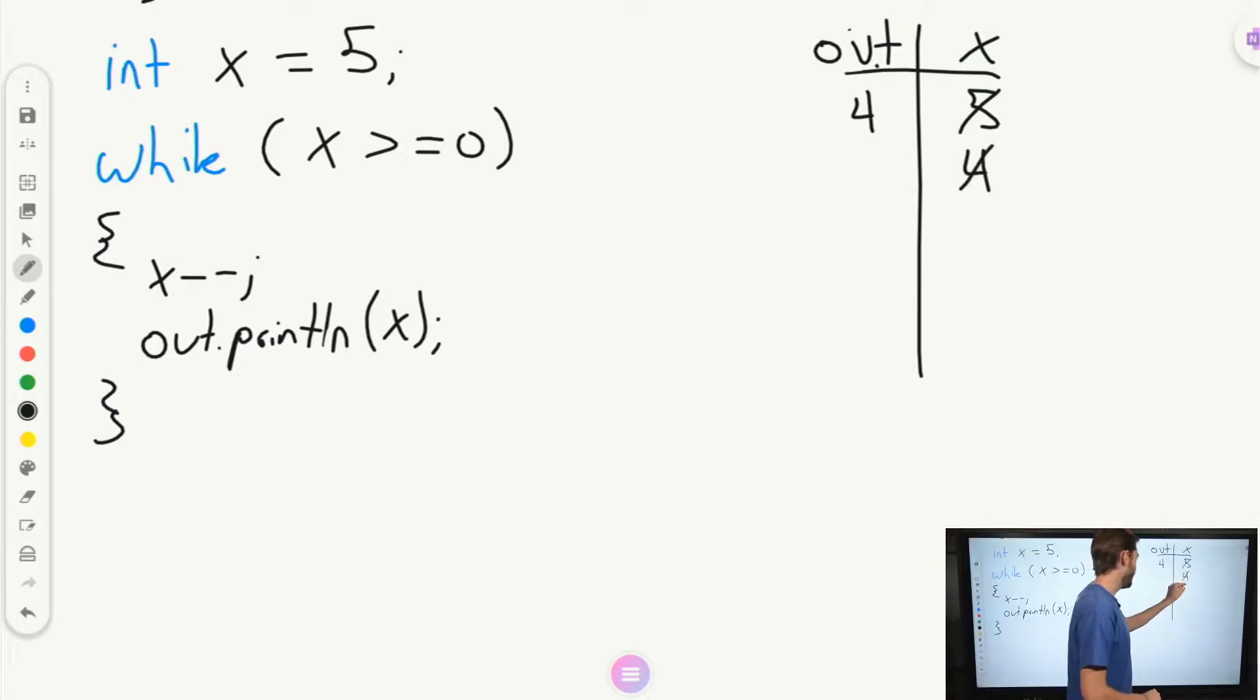Is 4 bigger than or greater than or equal to 0? Yes, it is. Good. Then I decrement x, which is my next line. And I output 3. Then I go back up. I check my condition here. Is 3 bigger than or equal to 0? Yes, it is. So then I step in and I decrement x. This is now 2. And I print out x. So I print 2.